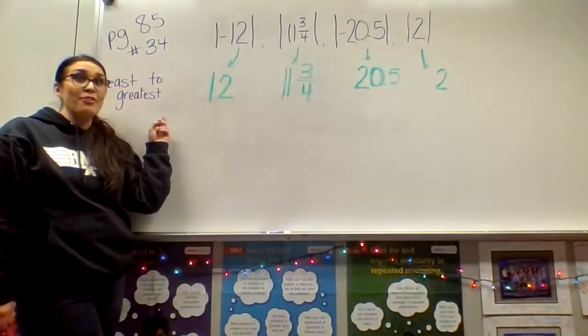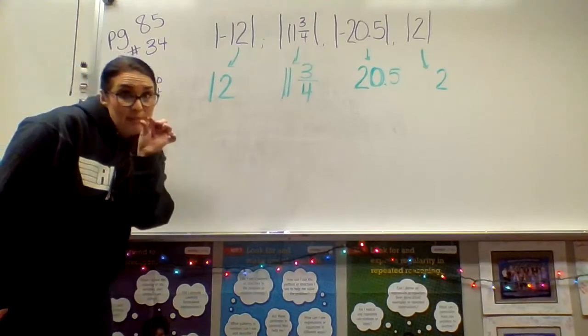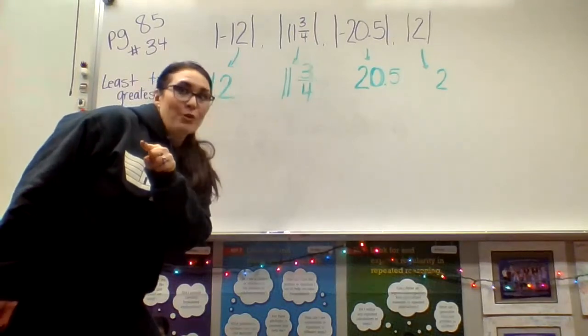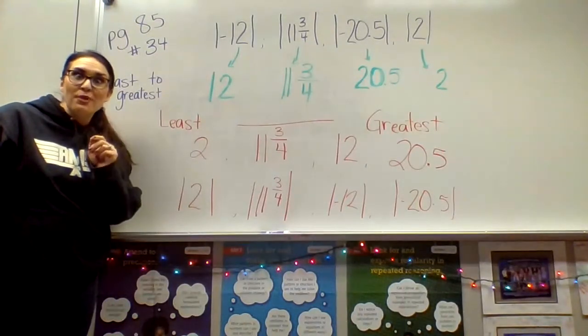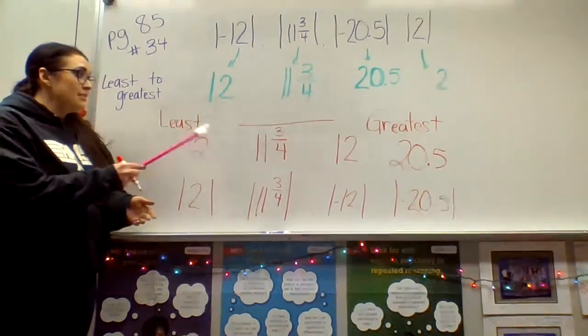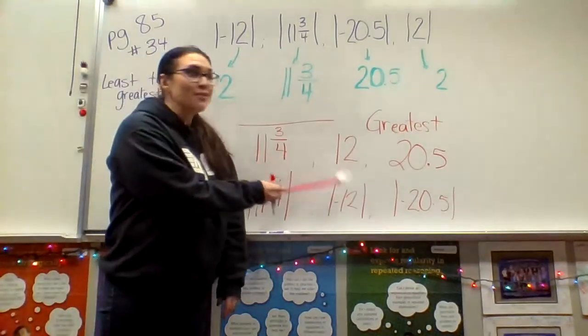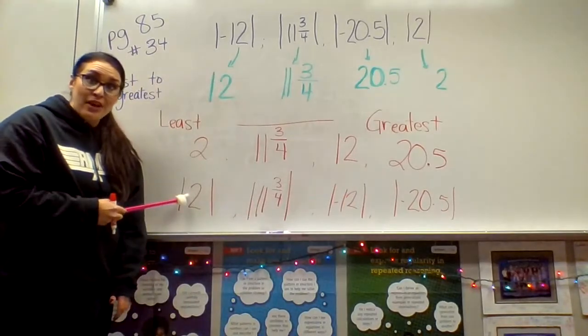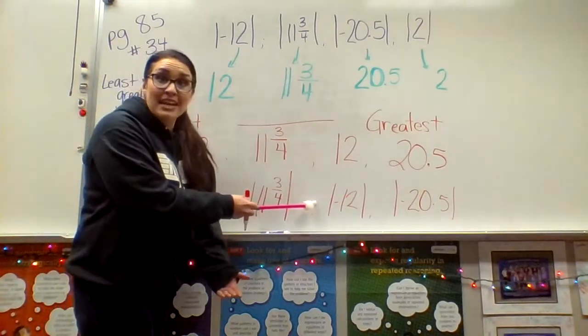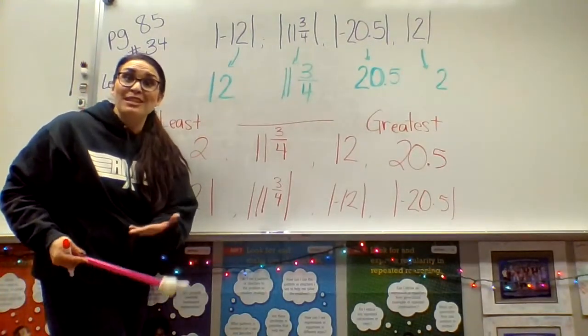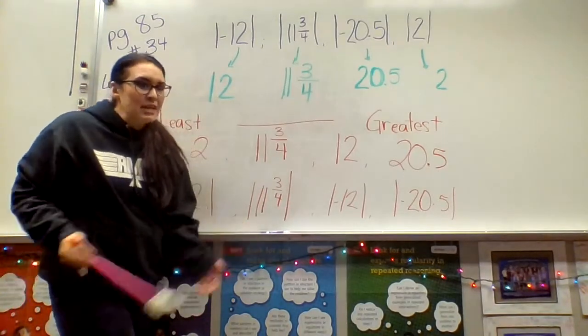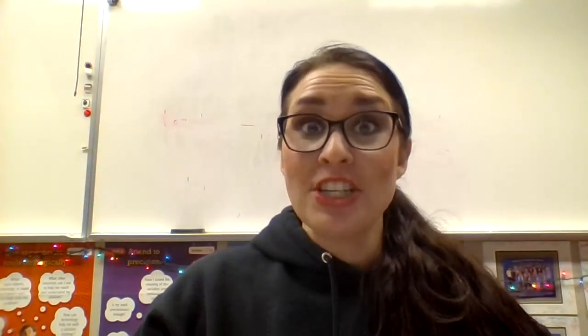Now for the second piece — ordering them from least to greatest, meaning smallest to biggest. Pause here if you want to try it yourself. The order from least to greatest is: 2, 11 and three-fourths, 12, and then 20 and a half. You can also write it using absolute value notation: the absolute value of 2, the absolute value of 11 and three-fourths, the absolute value of negative 12, and the absolute value of negative 20 and a half. Make sure you read the directions — if it asks for absolute value, leave it in that format. That was a quick video for lesson 2-3, introducing absolute values. If you have any questions, please let me know.